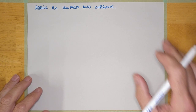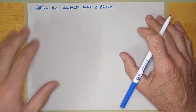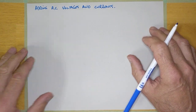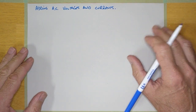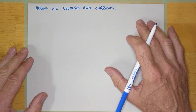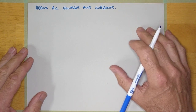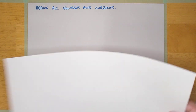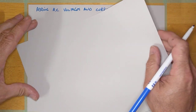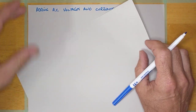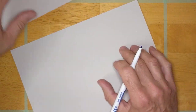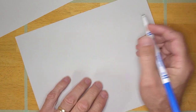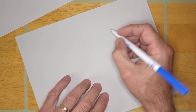Okay guys, welcome back. We're gonna spend some time trying to figure out how the heck we add AC voltages and currents together. Before we add AC voltages and currents together, I'm gonna get this piece of scrap paper out and we're just gonna talk about adding DC voltages really quickly, just so that we have some basic understanding of what's going on at least with DC.